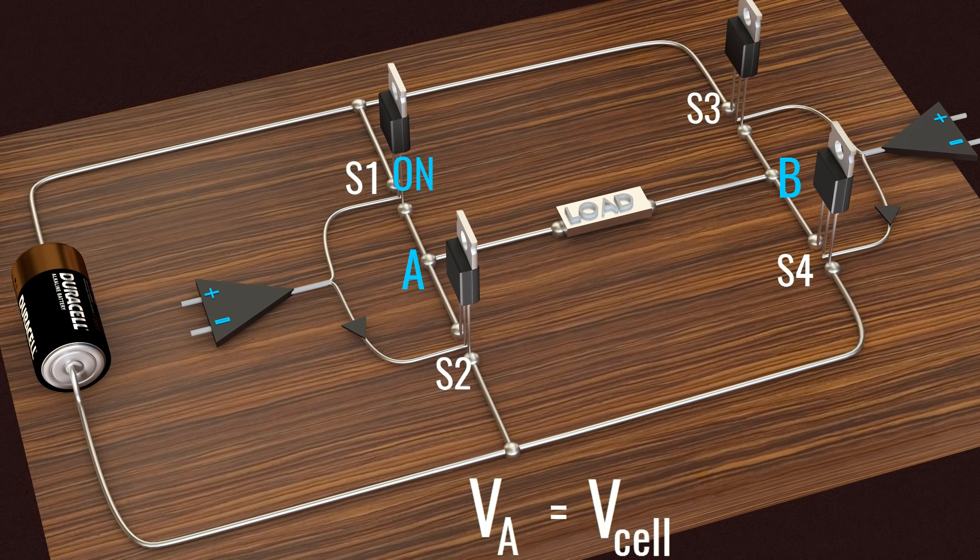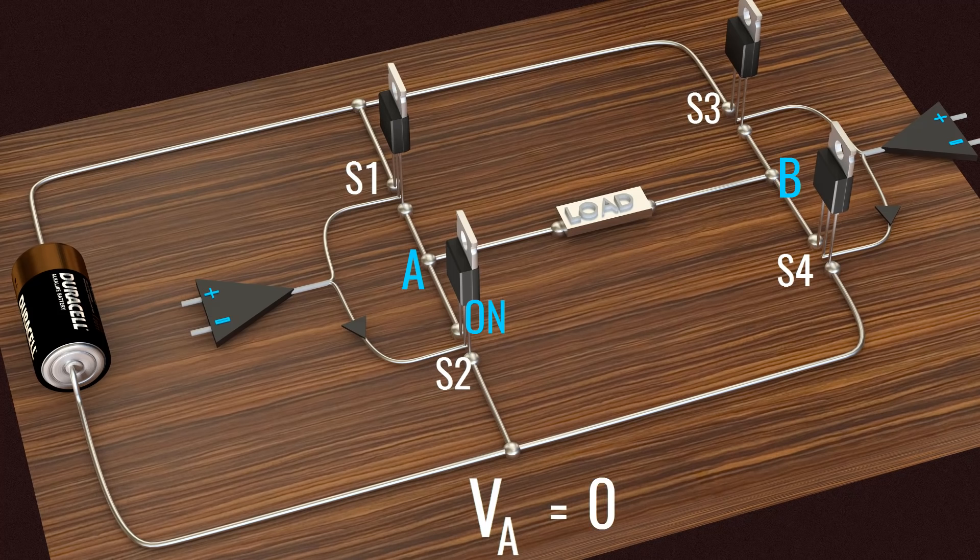Turning S1 on gives cell voltage at point A and turning on S2 gives 0 voltage at the same point. Same is the case for point B.